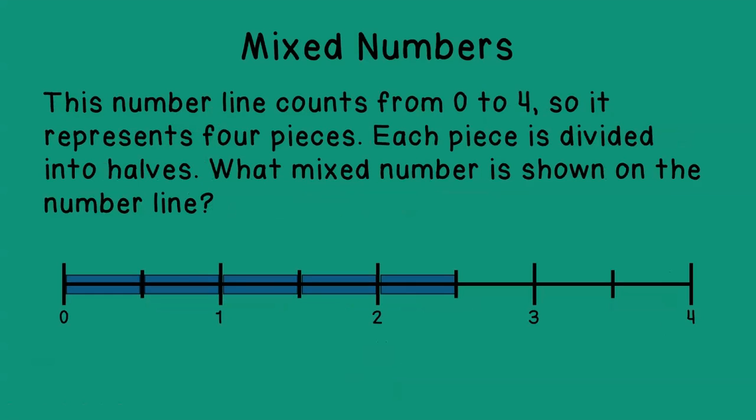This particular number line, if you take a look at it, represents 0 to 4, so it has 4 pieces. And each piece has been divided into 2 or halves. So what mixed number is shown on this particular number line? Well, if you take a look, we have 1 whole section right here, and another whole section right here. So this is 1, because it goes all the way to the 1. And then we have 2 more sections that are filled in, so it takes us to 2. So we have 2 whole parts, and then an additional half. So this mixed number is 2 and 1/2.